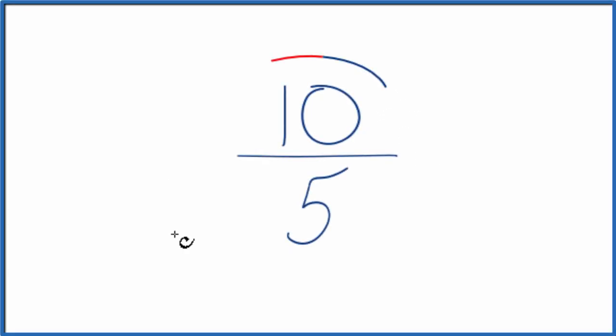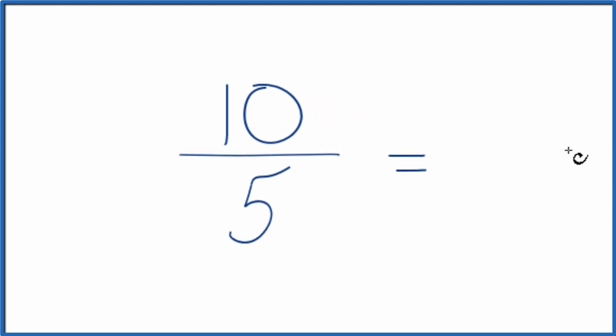Let's simplify the fraction 10 fifths and here's how you do it. We're trying to find another fraction that's equivalent to 10 over 5, has the same value just that we've reduced or simplified it to lowest terms.